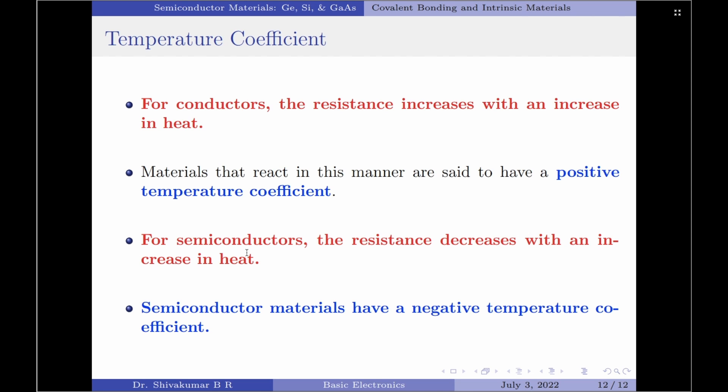Therefore, semiconductor materials exhibit an increased level of conductivity with the application of heat. This is because valence electrons absorb thermal energy and become free electrons. As the number of free electrons in the semiconductor increases, its conductivity also increases. Therefore, semiconductor materials have a negative temperature coefficient.